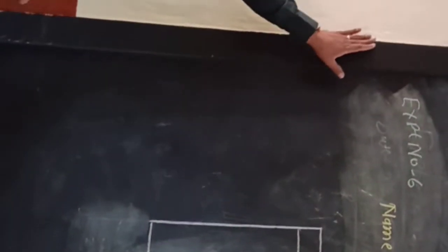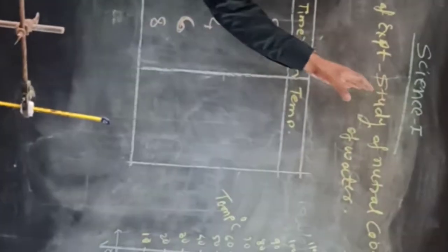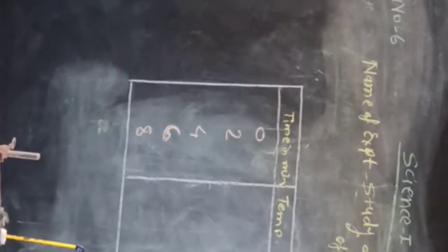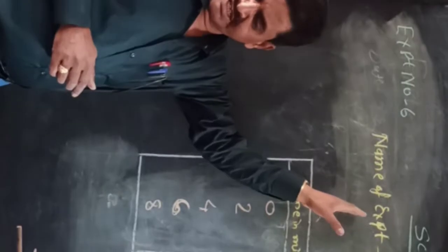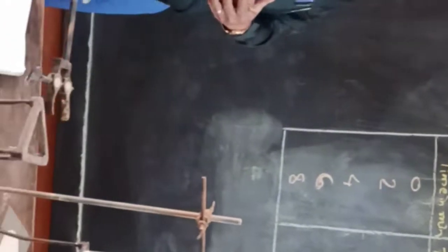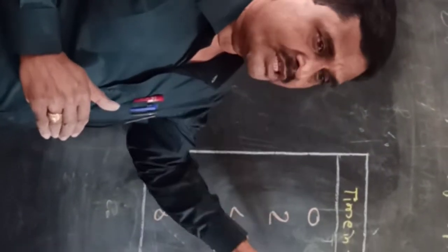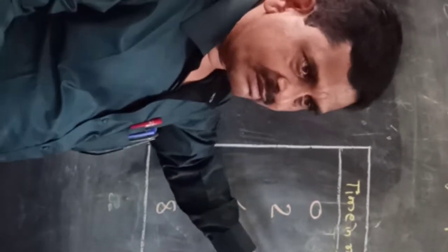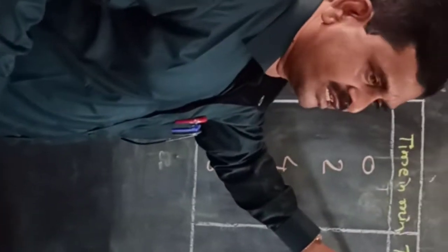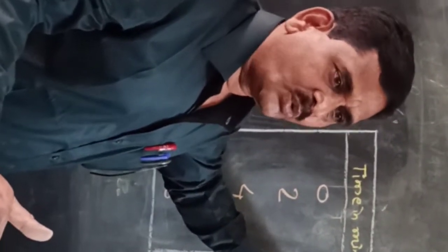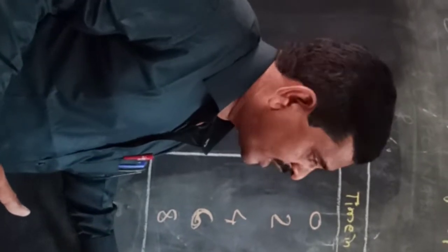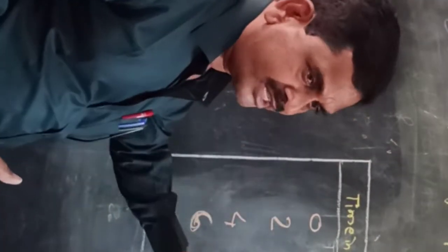Today we will start experiment number six, science practical. The name of the experiment is the study of Newton's cooling of water. This is the cooling water. We note down the temperature of the cooling water at intervals of two minutes: two, four, six, eight. These are the readings in minutes, and this is the temperature. The hot water temperature is noted at zero minutes, then the temperature decreases.